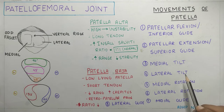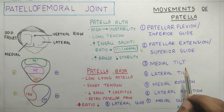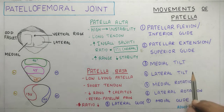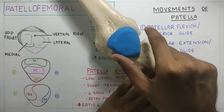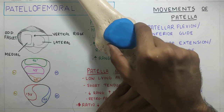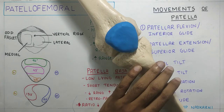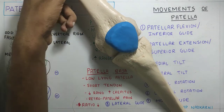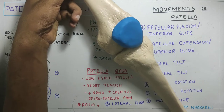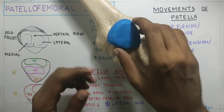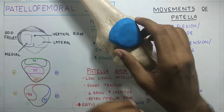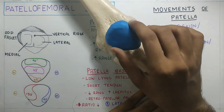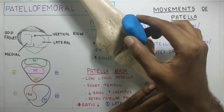The next movement is medial and lateral tilt. This tilt occurs when there is a relative lateral rotation of the femur, which causes lateral tilt of the patella. If the patella is in the patellar groove, when the femur rotates laterally, the patella moves along with the femur and tilts laterally.